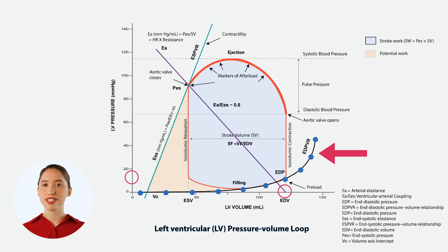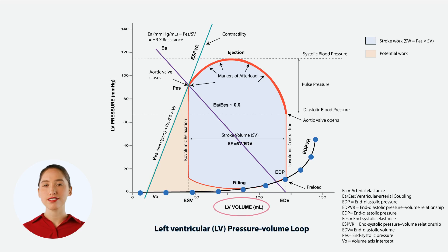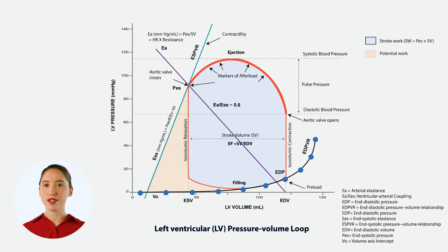Let's dive into what this curve represents and how we generate it. The EDPVR is a graphical tool that provides valuable insights into how the left ventricle of the heart handles different volumes of blood. On the x-axis of the graph, we have the volume of blood in the left ventricle at the end of diastole. On the y-axis, we have the pressure inside the ventricle at the same time.